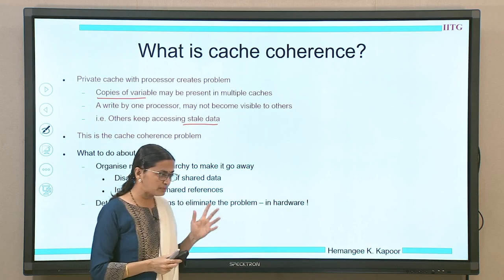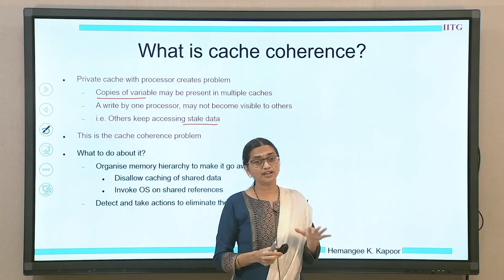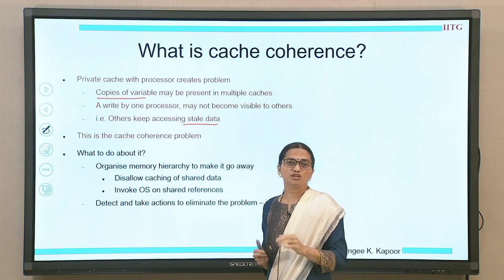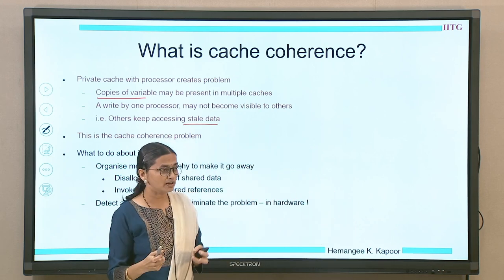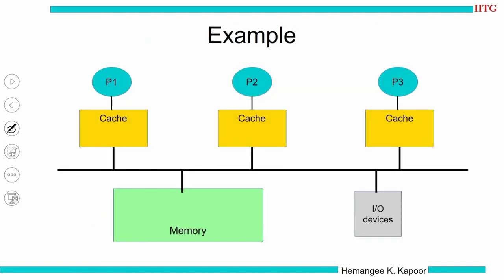What to do about this? The problem occurs because we allow a processor to change a variable in its local cache that is shared by others. One easy solution is to not allow caching of shared values, but caches are good for performance, so that is not acceptable. Another option is to ask the OS to manage shared data, but that is time-consuming. Hence we want to handle this inside the hardware. The cache coherence problem must be handled in hardware.